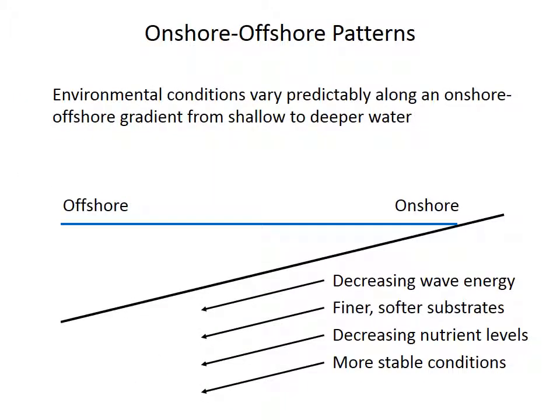In addition to large-scale patterns like the latitudinal diversity gradient, diversity and origination can also vary across environmental gradients. The onshore-offshore, or bathymetric, gradient from shallower to deeper water is a really important one that exerts a major influence on many different biological processes. Remember that depth itself doesn't directly affect organisms; rather, there are fairly predictable depth-related trends in things like wave energy, substrate quality, nutrient levels, and environmental stability in temperature, salinity, and frequency of storms.